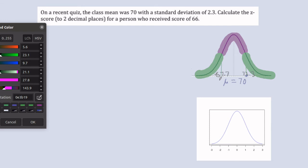One standard deviation below that, 70 minus 2.3 would be 67.7, and one standard deviation above that would be 72.1, and that's where those would be located.